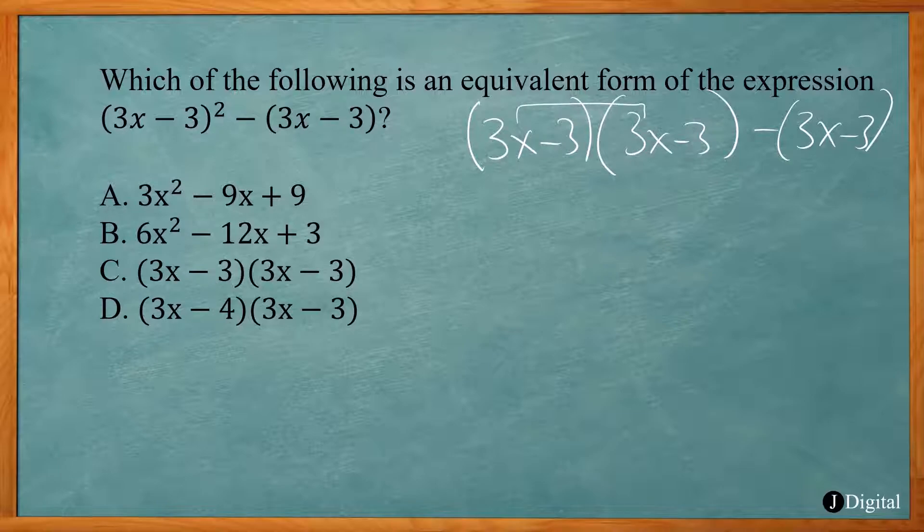So 3x times 3x is 9x². 3x times -3 is -9x. -3 times 3x is another -9x. And -3 times -3 is positive 9.